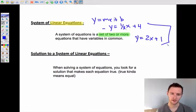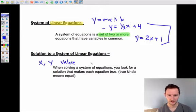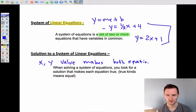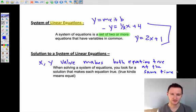The solution to a system of linear equations is whatever makes both equations true at the same time. That's sort of the informal definition. My own words for a solution: whatever x and y value makes both equations true at the same time. Your more formal definition here is when solving a system of equations, you look for a solution that makes each equation true. And true in this case sort of means equal.